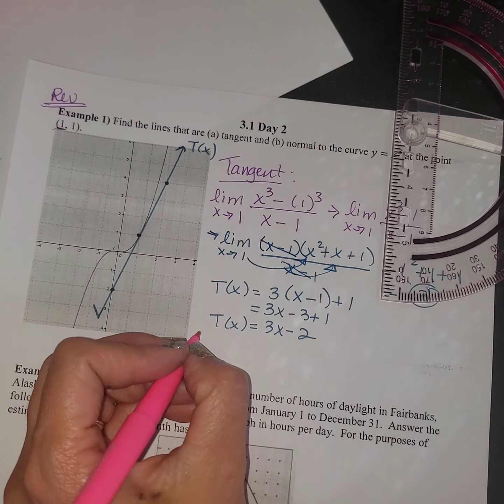So that means we're going to have a y-intercept at negative 2, and we're going to go up 1, 2, 3 over 1 at that point 1, 1. And then I'm going to use my protractor to help me get a straight line.